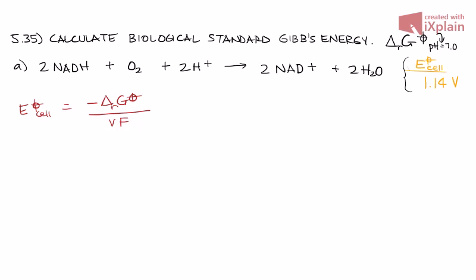We have most of the things we need to solve for delta G already. We have the cell potential and F, which is Faraday's constant. All we're missing is V, which is the stoichiometric coefficient of electrons in the half-reactions. In other words, it's the amount of electrons being transferred or involved in the redox reaction. The easiest way to find V is to break up this big redox reaction into its constituent oxidation and reduction reactions.